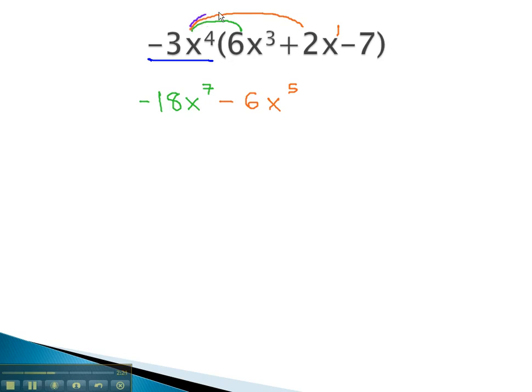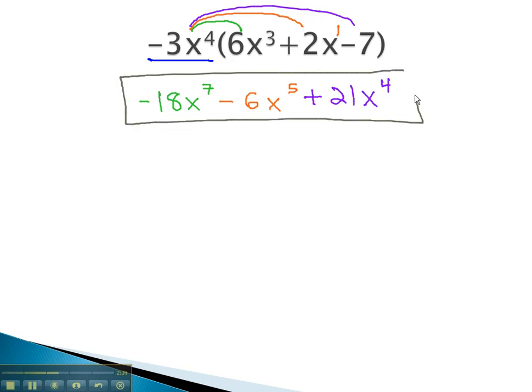Finally, negative 3x to the 4th times negative 7 is a positive 21x to the 4th. And this becomes our final solution.